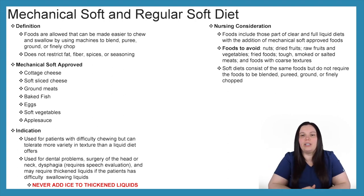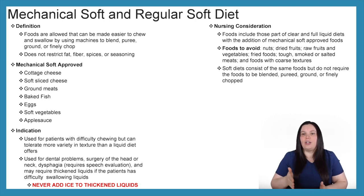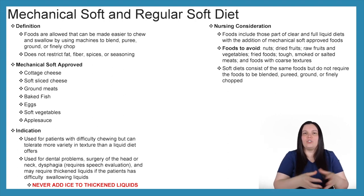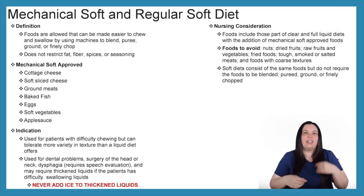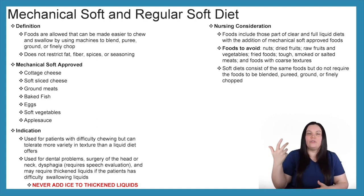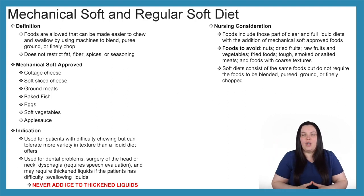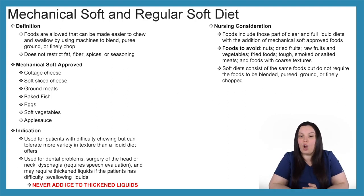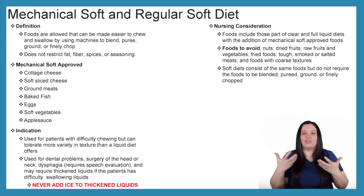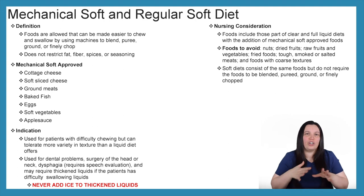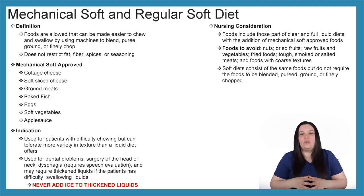Nursing considerations for the mechanical soft diet include that these foods are part of the clear and full liquid diets with the addition of mechanical soft approved foods — so patients can have clear or full liquids as well. Foods to avoid include nuts, dried fruits, raw fruits and vegetables, fried food, tough, smoked or salted meats, no jerky, and foods with coarse textures.